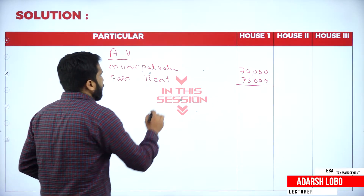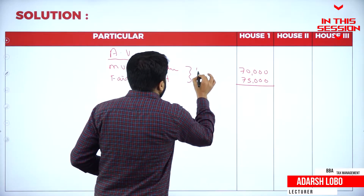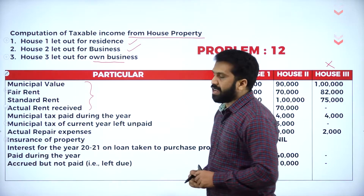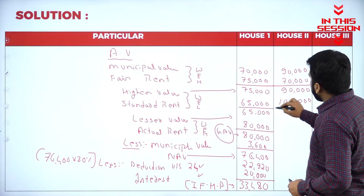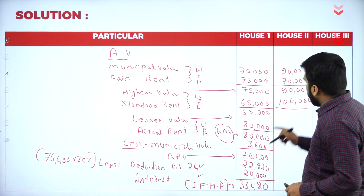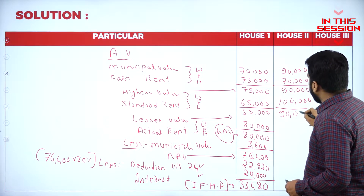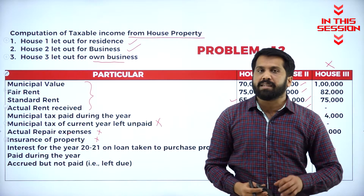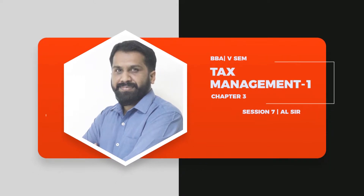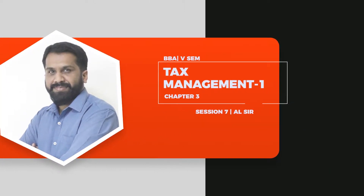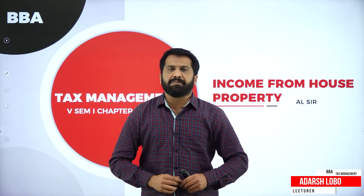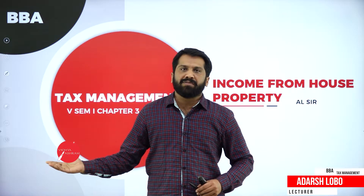Fair rent or municipal value — whichever is higher we will consider. Municipal tax of the current year left unpaid, we will not consider. The procedure is whichever is less. One lakh or ninety thousand, we will go for ninety thousand. If it is for our own purpose, we should not consider — only the interest part we should consider. Hello everyone, this is your Adhasa lecturing with you from First Grade College, the temple of excellence.